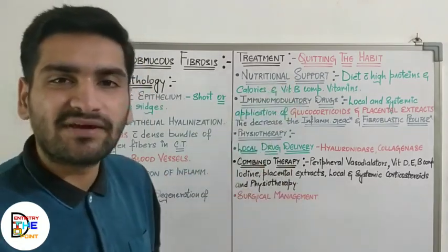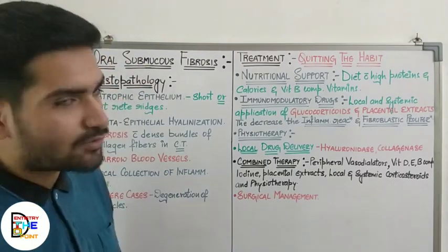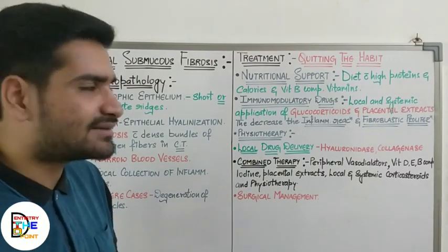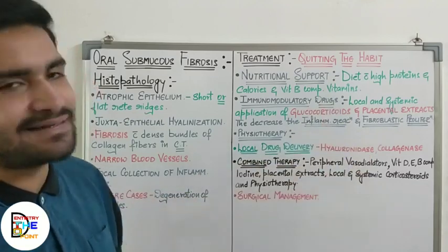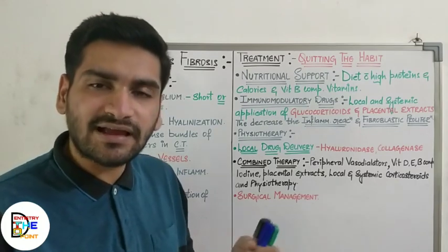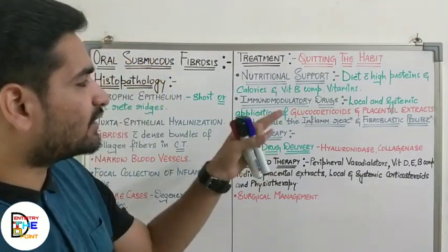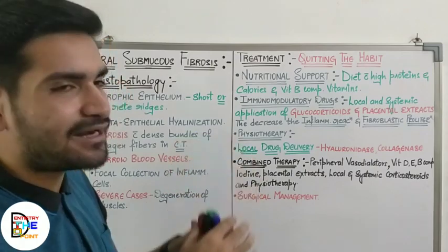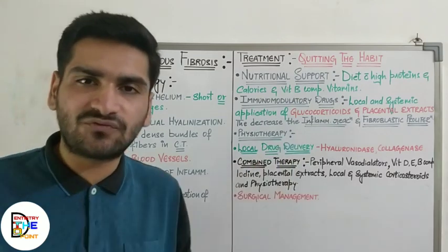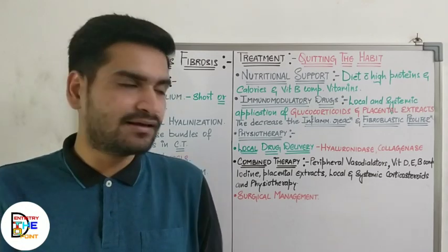The next treatment modality is immunomodulatory drugs — both local and systemic forms can be given, such as glucocorticoids and placental extracts. These help decrease the inflammatory reaction and reduce fibrosis to some extent. Physiotherapy is also very helpful, including forceful mouth opening, mouth exercises, blowing exercises, and heat therapy. When the patient practices these, the fibrotic bands break up and mouth opening increases.